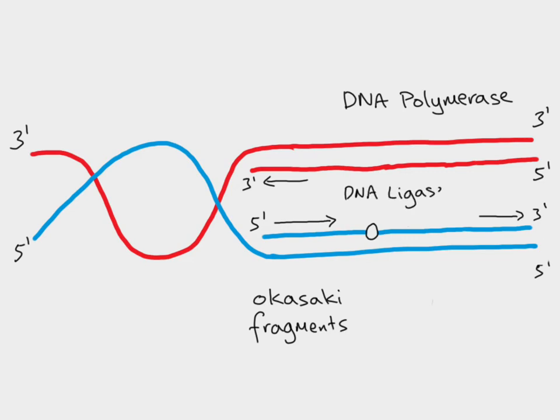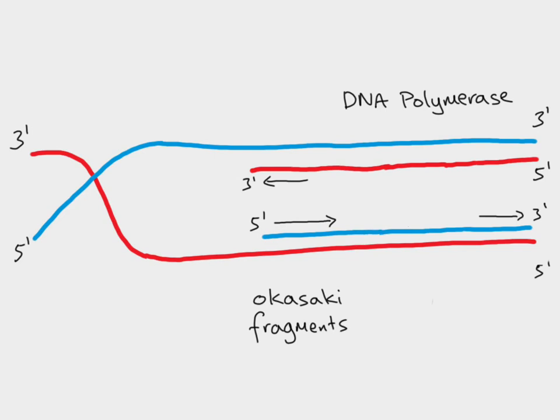Those fragments have to be joined together using DNA ligase. And then again the process can just continue. DNA helicase unzips it. DNA polymerase works in a 5' to 3' direction on both of the new strands. But on this strand here, it has to make Okazaki fragments. And then DNA ligase has to join them together.